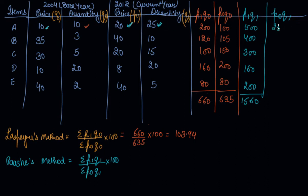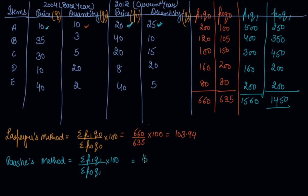For P0Q1, multiplying P0 by the current year quantities, we get 250, 350, 450, 200, and 200. Adding these gives sigma P0Q1 equal to 1,450. So the Paasche index is 1,560 divided by 1,450 into 100, which gives an answer of 107.59.